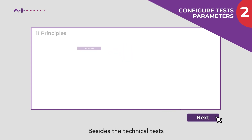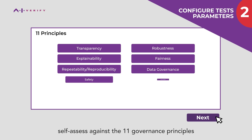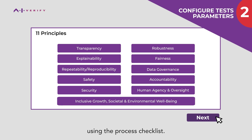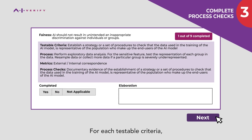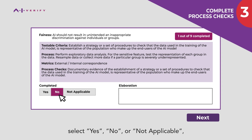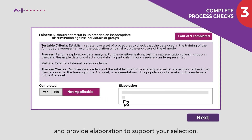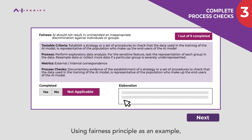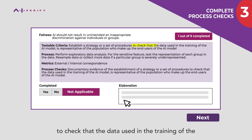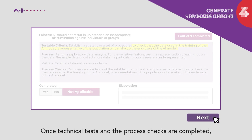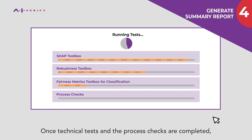Besides the technical tests, self-assess against the 11 governance principles using the process checklist. For each testable criteria, select yes, no, or not applicable, and provide elaboration to support your selection. Using the fairness principle as an example, indicate whether you have put in place measures to check that the data used in the training of the AI model is representative of the end-user population.